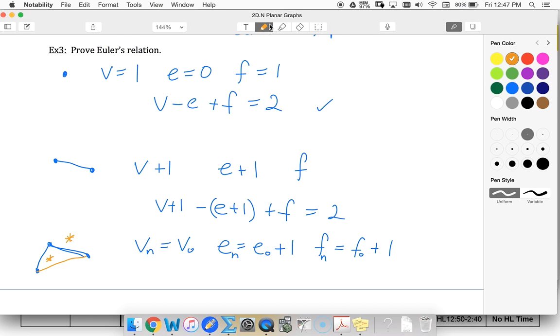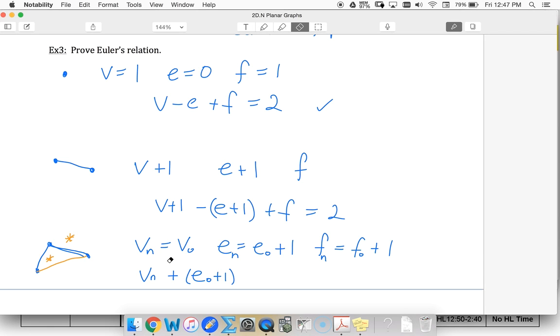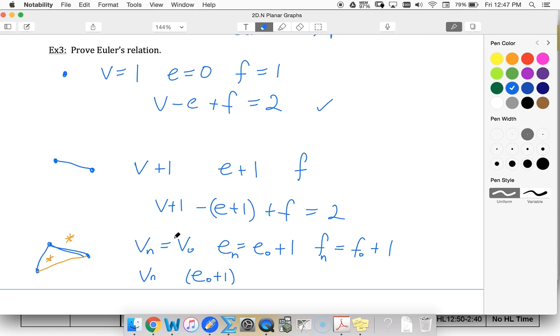Looking at Euler's relation, if I take my number of new vertices minus my number of new edges plus my number of faces - notice these are equal, so I can use either one. Euler's relation is still holding true.